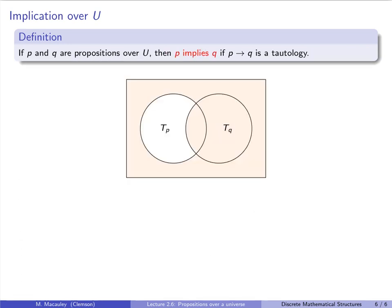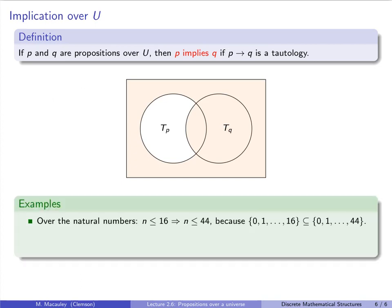Finally, we come to implication over a universe. If P and Q are propositions over U, then P implies Q if and only if the conditional P→Q is a tautology. Recall that the truth set of P→Q is TP^c ∪ TQ. For this to be a tautology, that union must equal all of U — meaning there are no elements in TP that are outside TQ, i.e., TP ⊆ TQ.